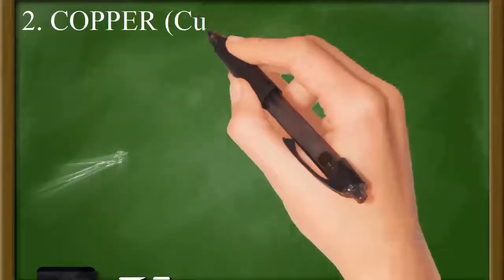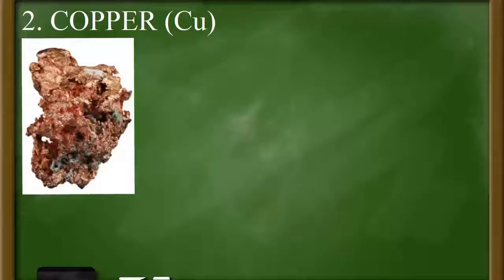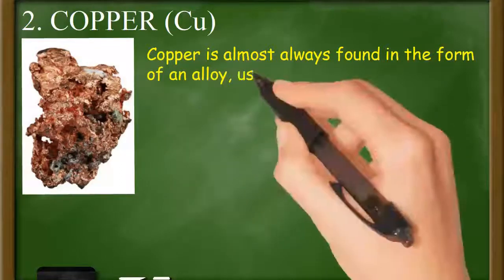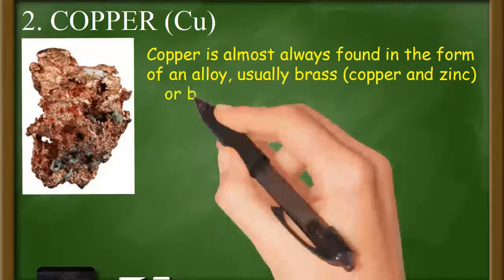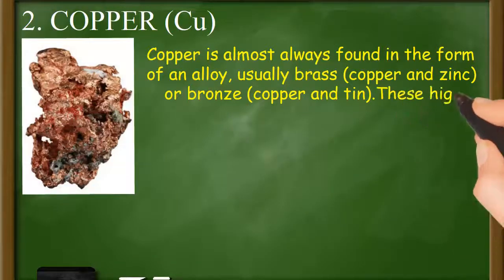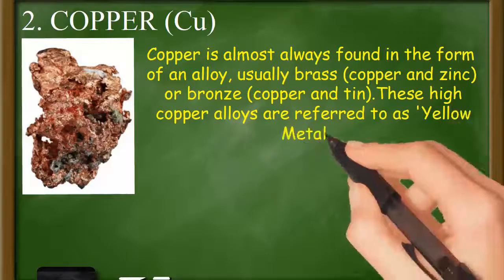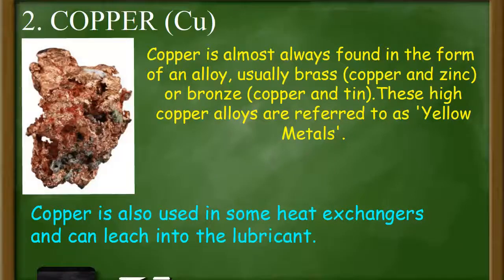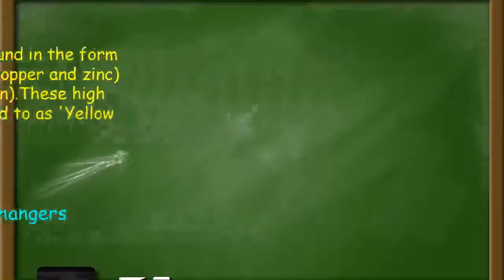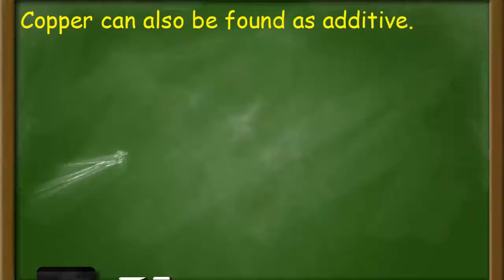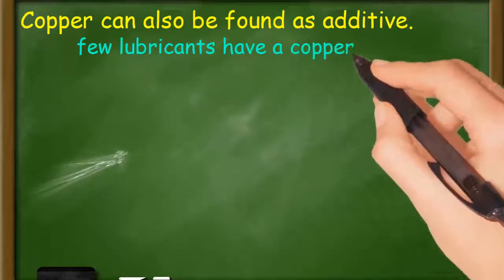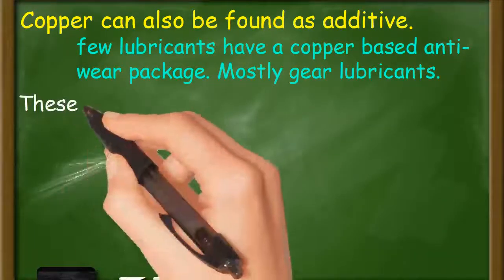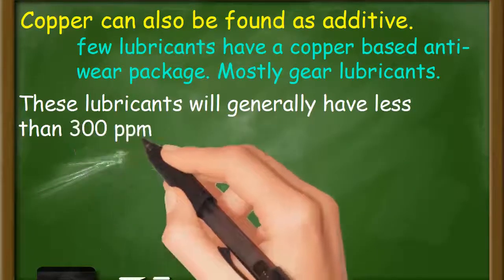Copper. Copper is almost always found in the form of an alloy — usually brass (copper and zinc) or bronze (copper and tin). These high copper alloys are referred to as yellow metals. Copper is also used in some heat exchangers and can leach into the lubricant. Copper can also be found as an additive; a few lubricants, mostly gear lubricants, have a copper-based anti-wear package and will generally have less than 300 ppm copper present.